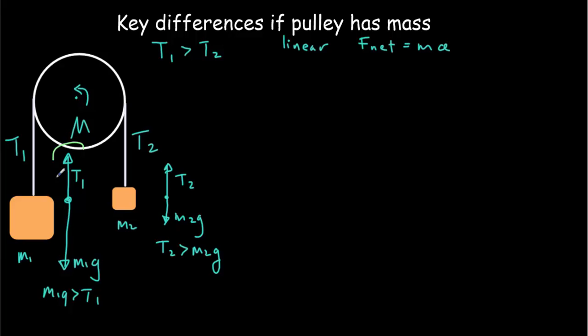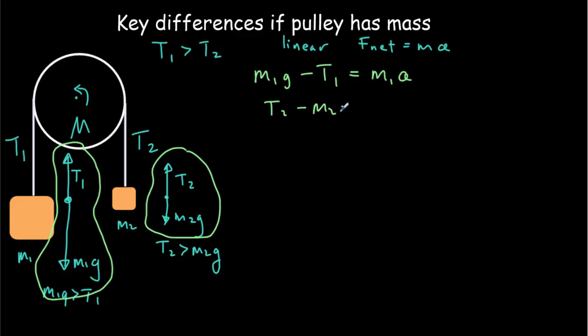All we need to do is look at the free body diagrams. This one says that the net force M1g minus T1, that's the magnitude of that net force, must equal M1 times A. This free body diagram says that T2 minus M2g must equal M2 times A.